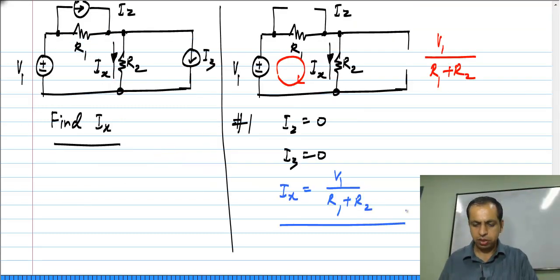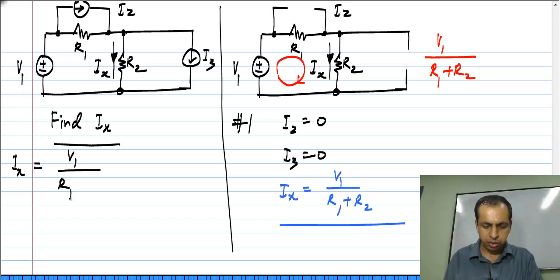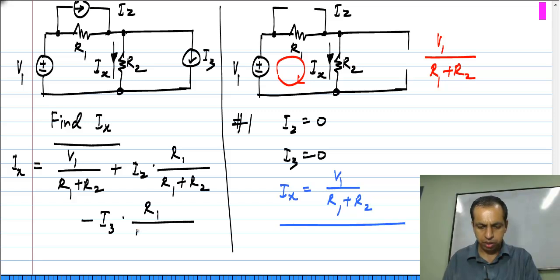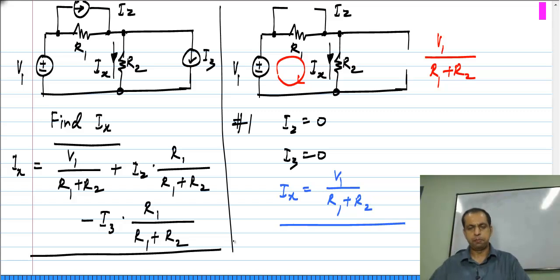We have the results from the three steps which we sum together to find the total current Ix. The total current Ix is given by V1 divided by R1 plus R2, plus I2 times R1 by R1 plus R2, minus I3 times R1 by R1 plus R2. This is how you use superposition to analyze circuits with multiple independent sources.